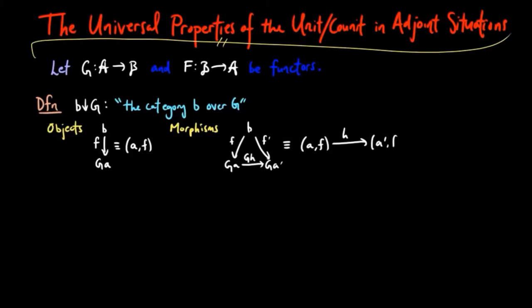Note that we can also define the category B over G as the pullback of the projection functor from B cross A to A, followed by G, and the functor from the trivial one object category, which picks out the object B in B.